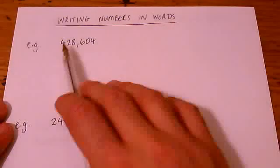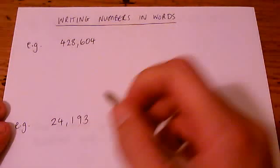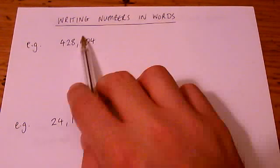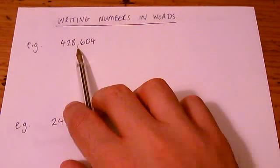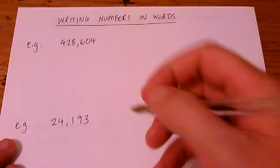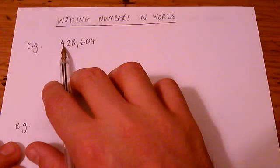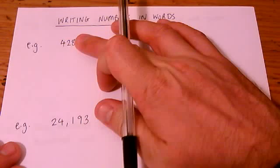So let's take a look at this first example. We have to write this number using words. And the nice thing about our number system is that we tend to chunk these large numbers into smaller bits with commas in between them. And the commas tell you where to put certain words when you're writing it out. So if we look at this first bit here, it's like a 428. You can almost ignore that bit.